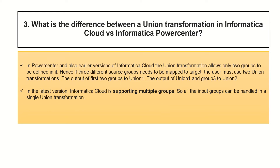The third question is what is the difference between a union transformation in Informatica Cloud and Informatica Power Center. In Informatica Power Center and also earlier versions of Informatica Cloud, the union transformation allows only two groups to be defined. Hence if three different source groups need to be mapped to the target, the user must first create a union for two groups, and then union the output of that with another group — requiring two unions for three groups of data.